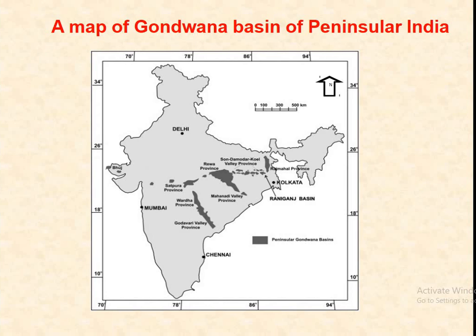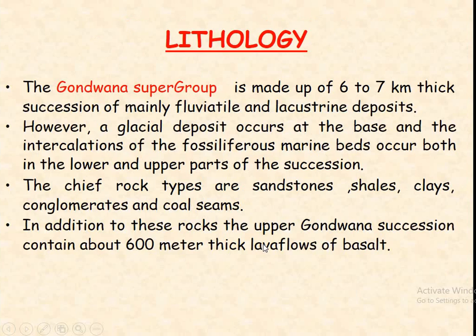This is the map of the Gondwana Basin of Peninsular India, in which all these are the Gondwana provinces. These include the Son, Damodar, Koyal Valley provinces, Rajmahal provinces, Rewa provinces, Satpura provinces, Wardha provinces, Godavari provinces, and Mahanadi Valley provinces.